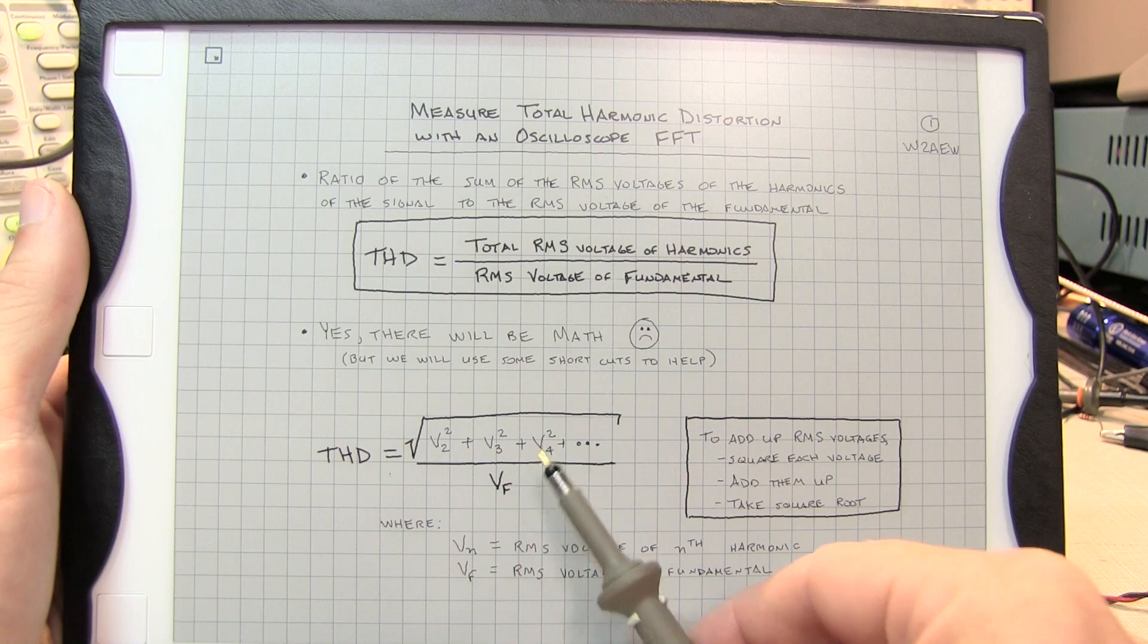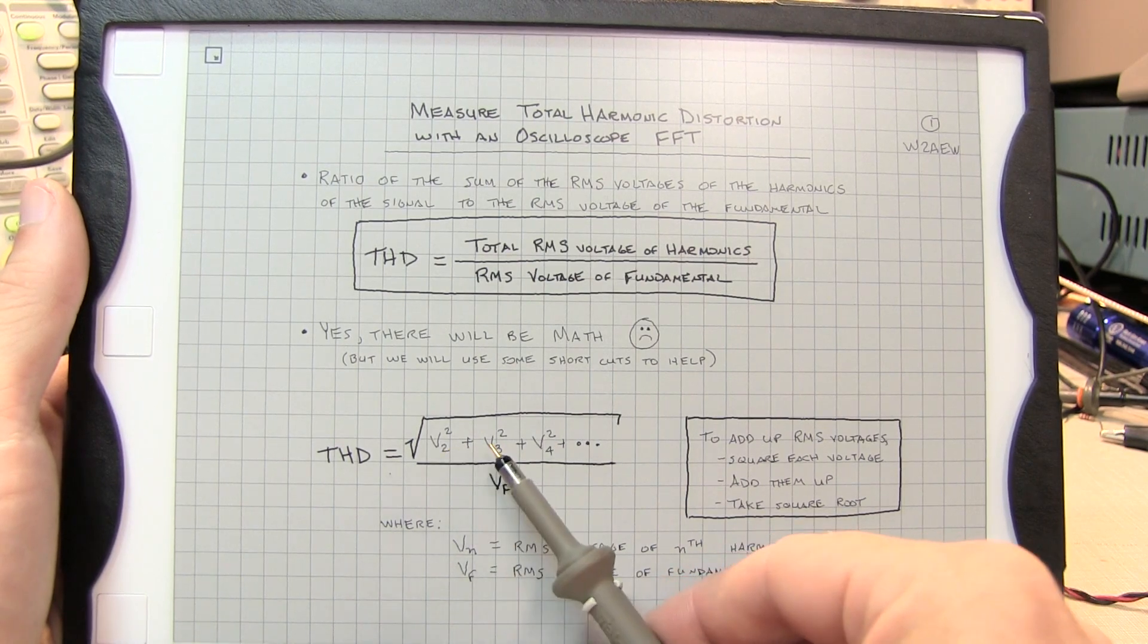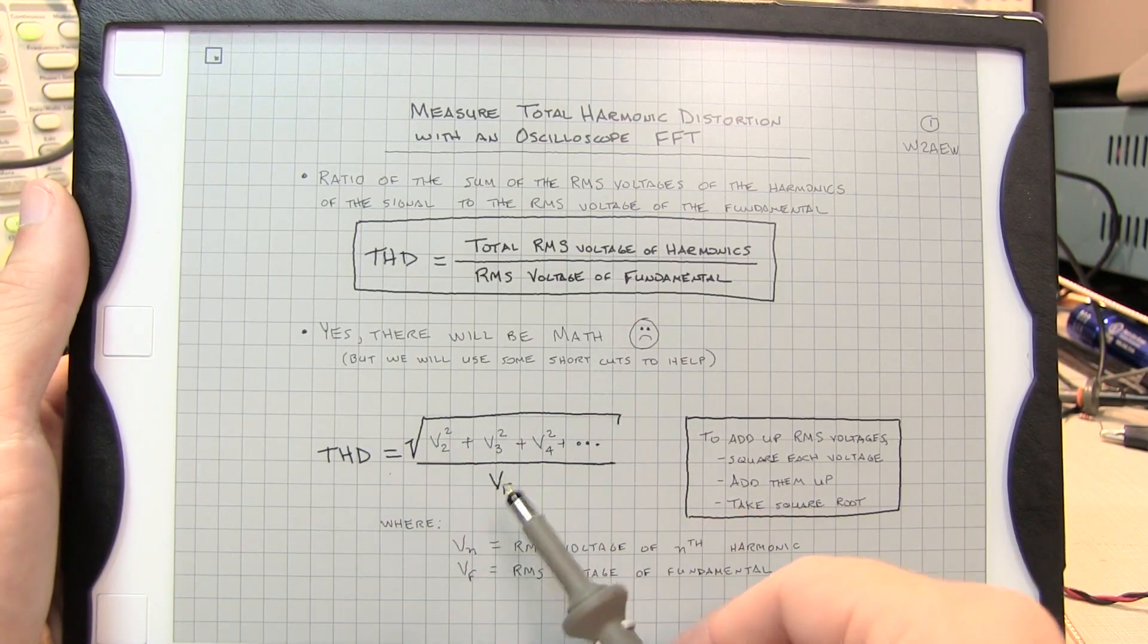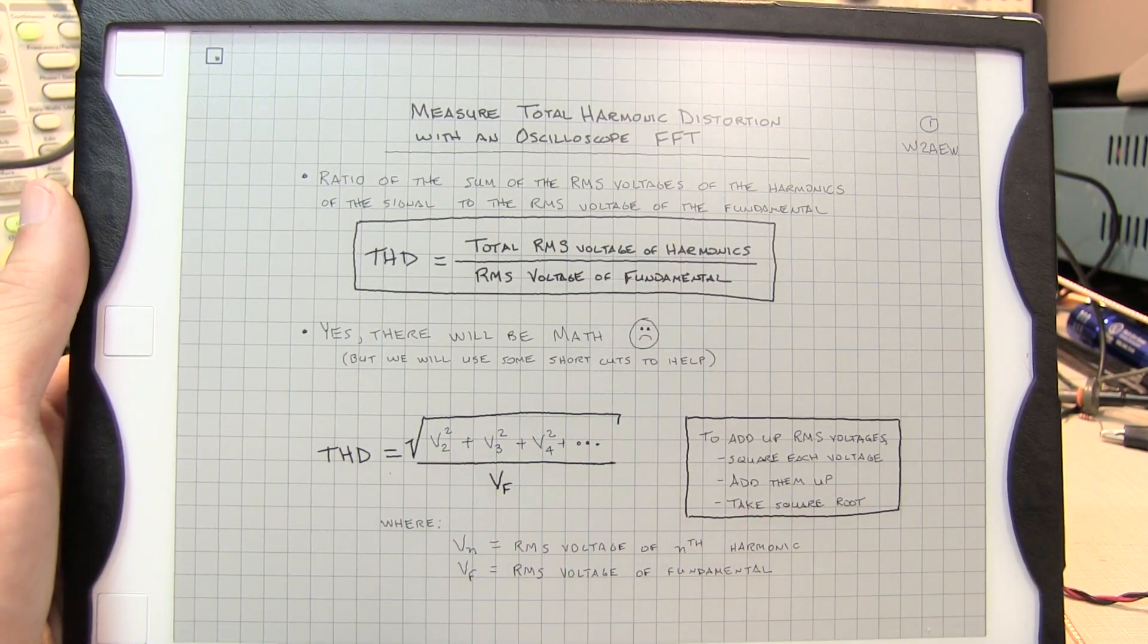So V2, V3, V4 represent the second, third, and fourth harmonics, and then we're squaring each of those terms, taking the square root, and then dividing by the RMS voltage of the fundamental.